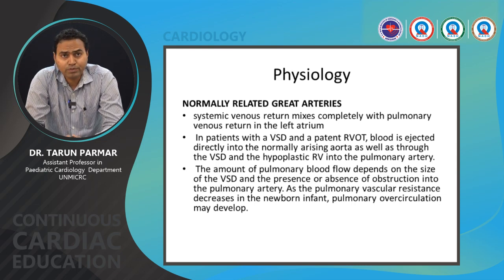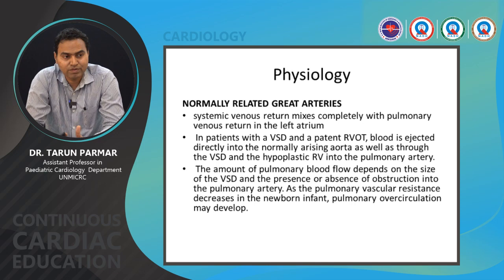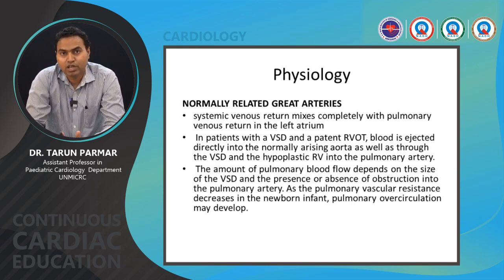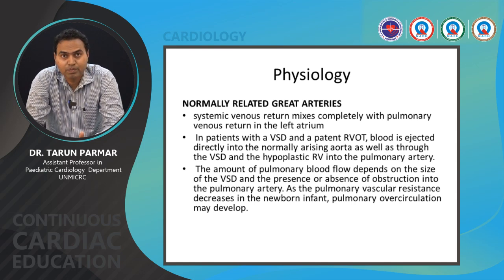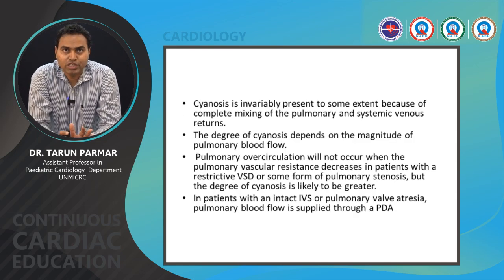In a patient with a VSD, blood flows directly into the normally arising aorta as well as through the VSD and hypoplastic RV into the pulmonary arteries. The amount of pulmonary blood flow depends on the size of the VSD and the presence or absence of obstruction at the pulmonary artery level. As pulmonary vascular resistance decreases, pulmonary overcirculation may develop by four to six weeks of life. Cyanosis is invariably present, as this is a cyanotic CHD due to complete mixing of pulmonary venous and systemic venous blood.